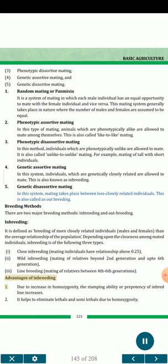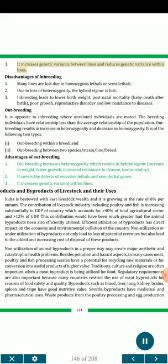Advantages of inbreeding: 1. Due to increase in homozygosity, the stamping ability or prepotency of inbred lines increases. 2. It helps to eliminate lethals and semi-lethals due to homozygosity. 3. It increases genetic variance between lines and reduces genetic variance within lines. Disadvantages of inbreeding: 1. Many lines are lost due to homozygous lethals or semi-lethals. 2. Due to loss of heterozygosity, the hybrid vigor is lost. 3. Inbreeding leads to lower birth weight, postnatal mortality, poor growth, reproductive disorder and low resistance to diseases.